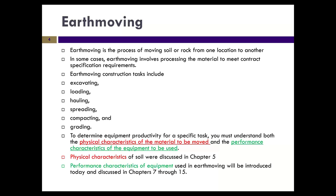Earthmoving is moving materials from location A to location B. Usually it's because the site you're going to construct on — whether it's a highway or a building site — is probably not at the elevation the designer needs it to be at. There are areas that have to be reduced in height, called cuts, and areas that need to be brought up to an elevation, called fills. We may also bring in soil with certain engineering properties, which we'll talk about when we discuss compaction.